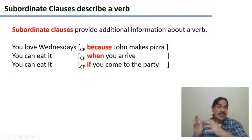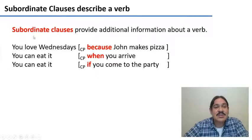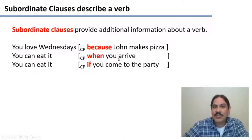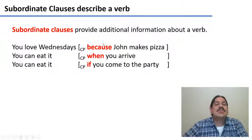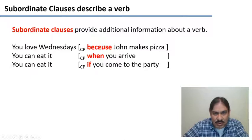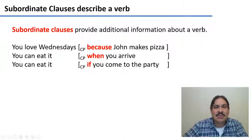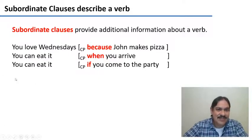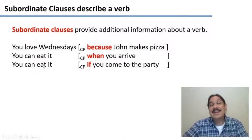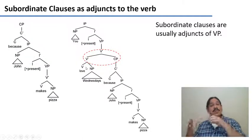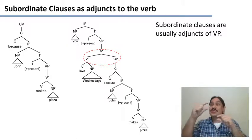Complement clauses can function as direct objects. They can also describe a verb — when they do this, we're going to call them subordinate clauses. For example: 'You love Wednesdays because John makes pizza,' 'you can eat it when you arrive,' or 'you can eat it if you come to the party.' These words — because, when, if — are going to be the head of the complement phrase, and they'll have a complement that is a fully inflected sentence, providing additional information about the verb. So we're going to put them where we put adverbs: as an adjunct to the verb, because they're describing the action.